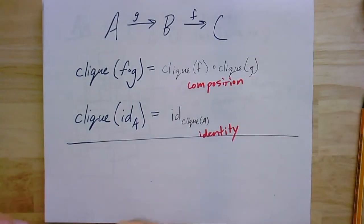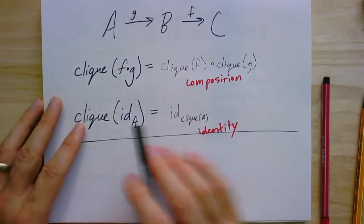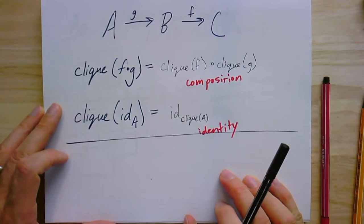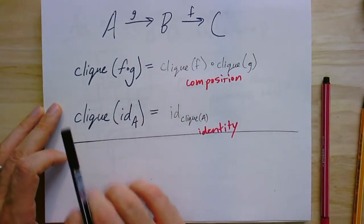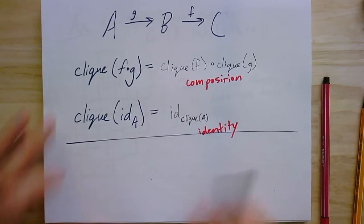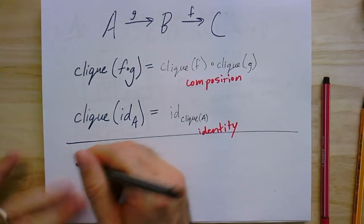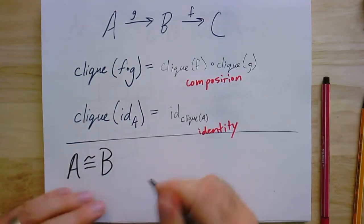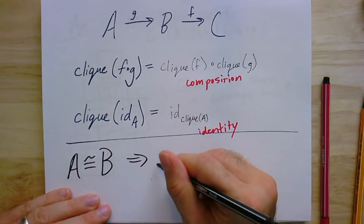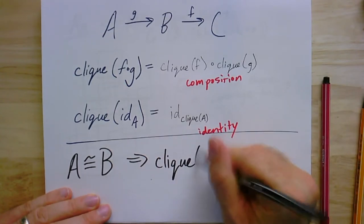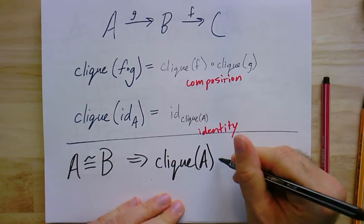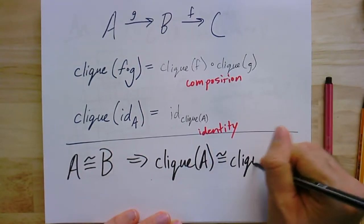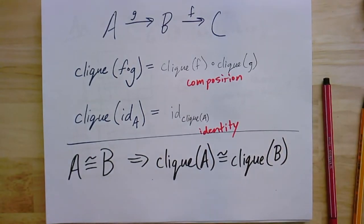This is another chance to point out the importance of looking at composition and identity. When you have this kind of operation — going from one kind of thing (a graph) to another (a simplicial complex), with graph homomorphisms mapping to simplicial maps in a nice way — one thing that comes out immediately is that if the graphs are isomorphic, it immediately implies that the clique complexes are also isomorphic. So isomorphism of graphs on the left implies isomorphism of simplicial complexes on the right.